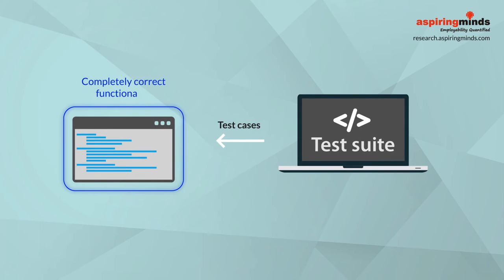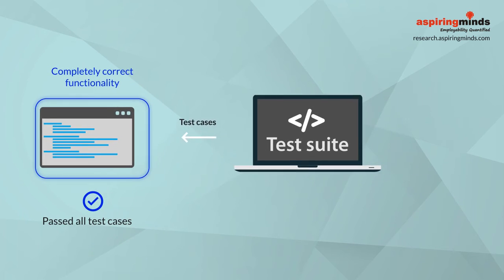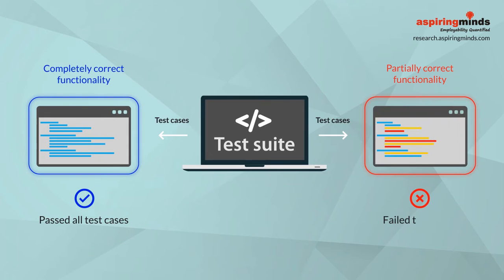Traditionally, test cases are used to grade programs. These are good to find codes which are completely correct. However, they provide little insight into the quality of the code if it doesn't pass all test cases. It also doesn't identify codes which are mostly correct but have silly errors.